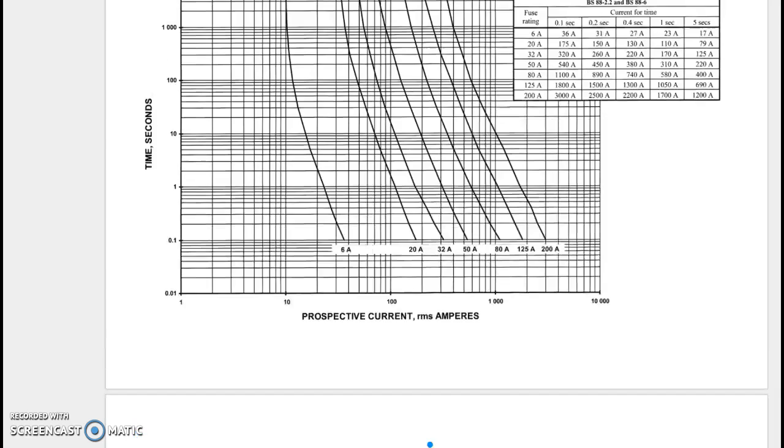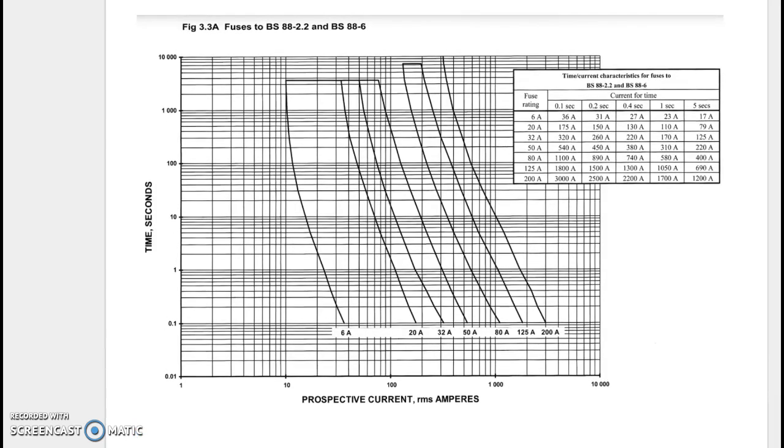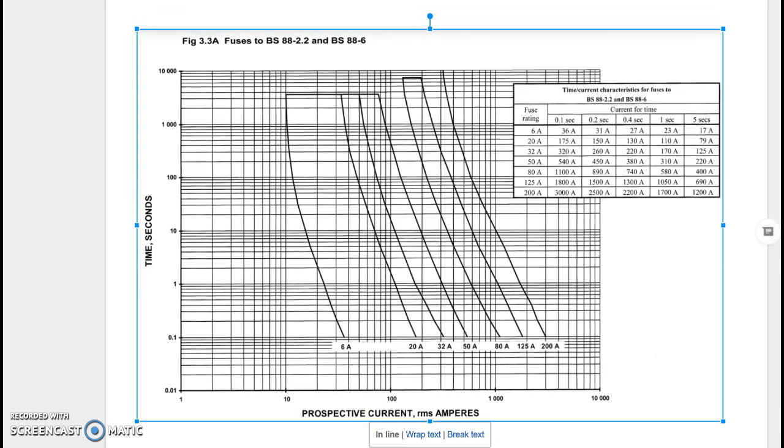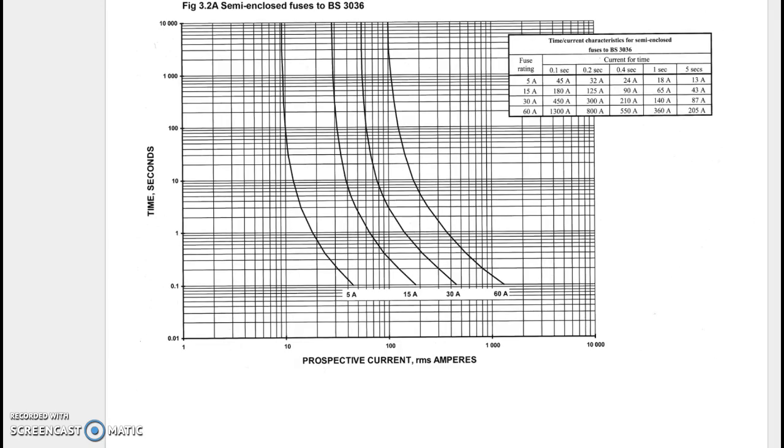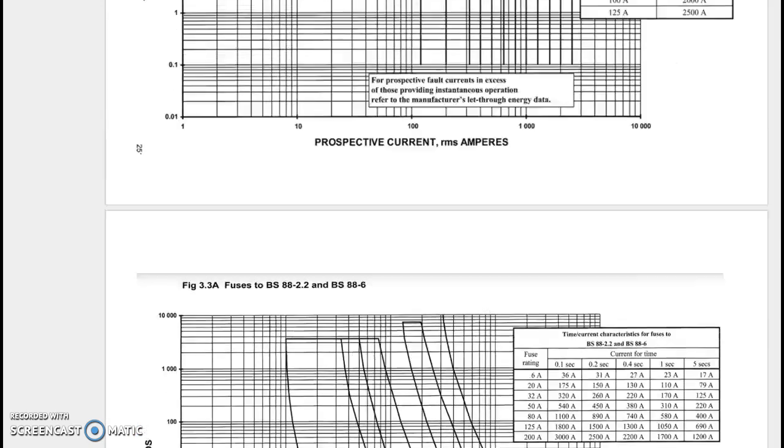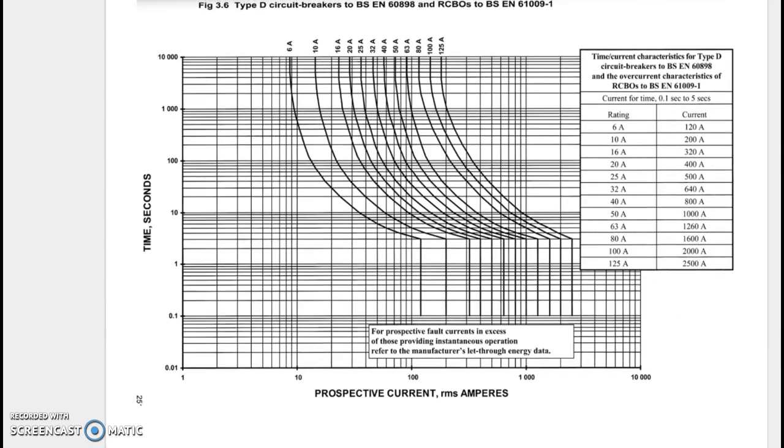The BS88, these are high rupturing capacity fuses generally found on high current installations in industry or your intakes for switch gear and so on, motor controls.